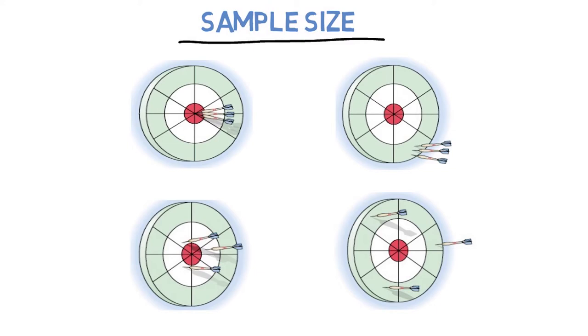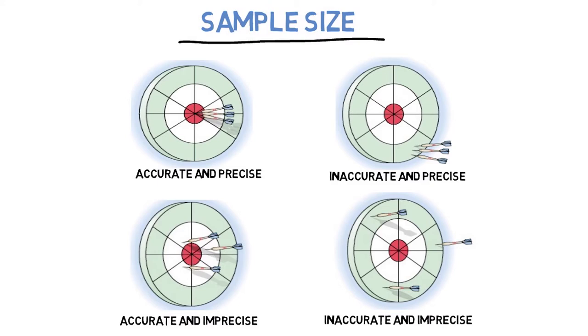So suppose you hear that a new toothpaste users report 40% fewer cavities. You should review how the experiment was conducted, how the sample selection was conducted, and if there were sufficient numbers of toothpaste users versus a control group. The value you are looking at could be accurate and precise, this is what we would want the value to represent, inaccurate but precise, accurate and imprecise, or inaccurate and imprecise, which is what we definitely do not want.